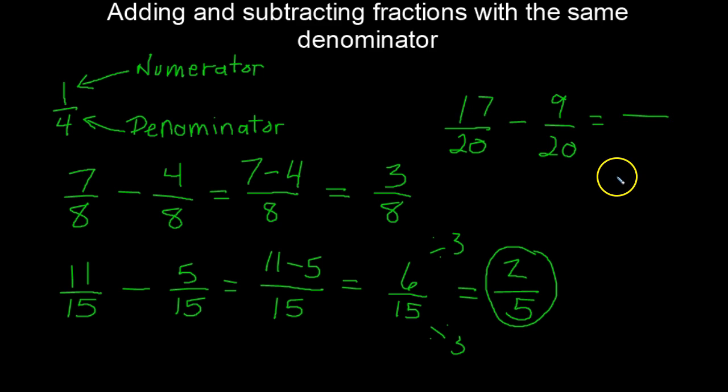As you should know by now, the denominator is going to be twenty, so we're just working with seventeen subtract nine. That's going to be eight twentieths, and we can reduce that.